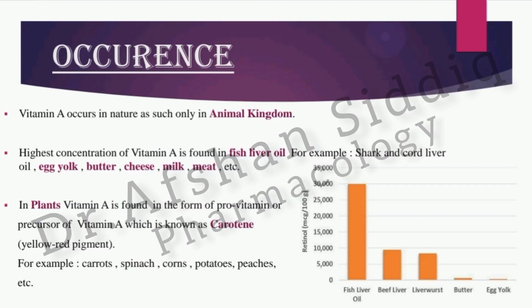As far as its occurrence is concerned, this vitamin is found in nature most abundantly in the animal kingdom. The highest concentration of vitamin A is found in fish liver oil, shark, cod liver oil, milk, meat, cheese, and butter.